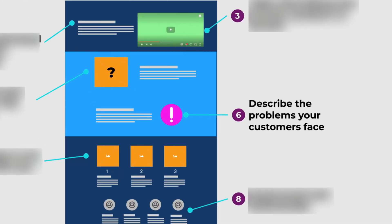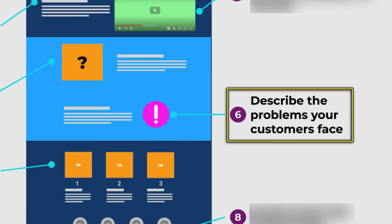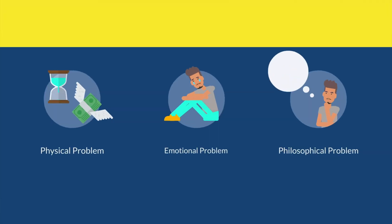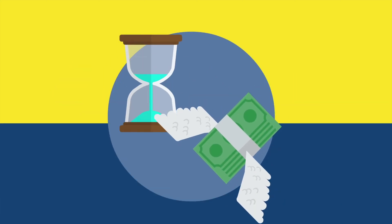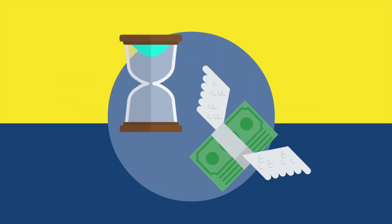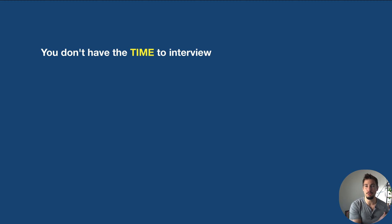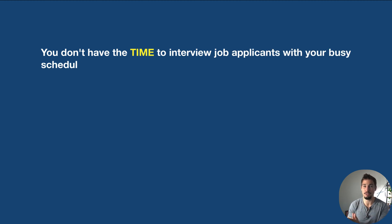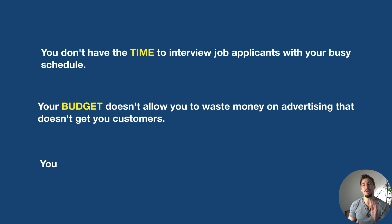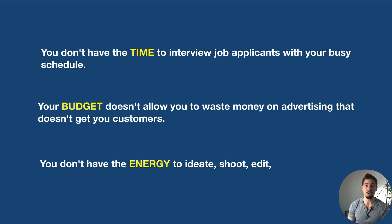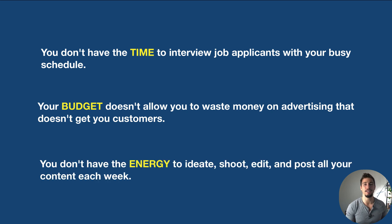Number six: the best service pages have a problem section. Think about the physical, emotional, and philosophical problems that your customers have. Physical problems usually have to do with time, money, and energy — like you don't have the time to interview job applicants with your busy schedule, or your budget doesn't allow you to waste money on advertising that doesn't get you customers, or you don't have the energy to ideate, shoot, edit, and post all your content each week.